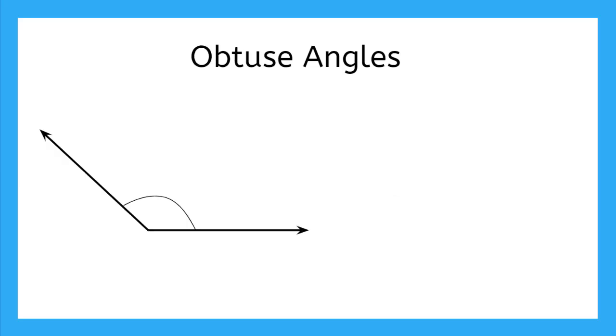An obtuse angle is an angle that is more than 90 degrees but less than 180 degrees. It is right between a right angle and a straight angle.